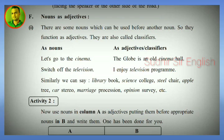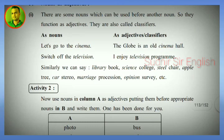Similarly we can say: library book, science college, steel chair, apple tree, castor oil, marriage procession, opinion survey. In all these, the first noun classifies the second noun.